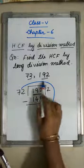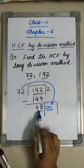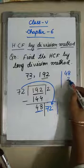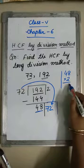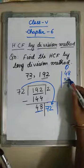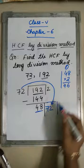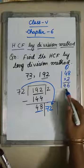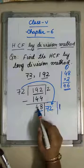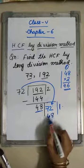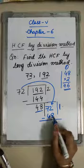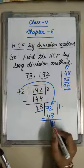Now you bring this divisor 72 down as the new dividend and divide by the remainder 48. 72 into 1 gives 48, and if I multiply 48 by 2 I get 96, so I write 1 as quotient. 48 into 1 is 48. Subtract: 72 minus 48 gives remainder 24.